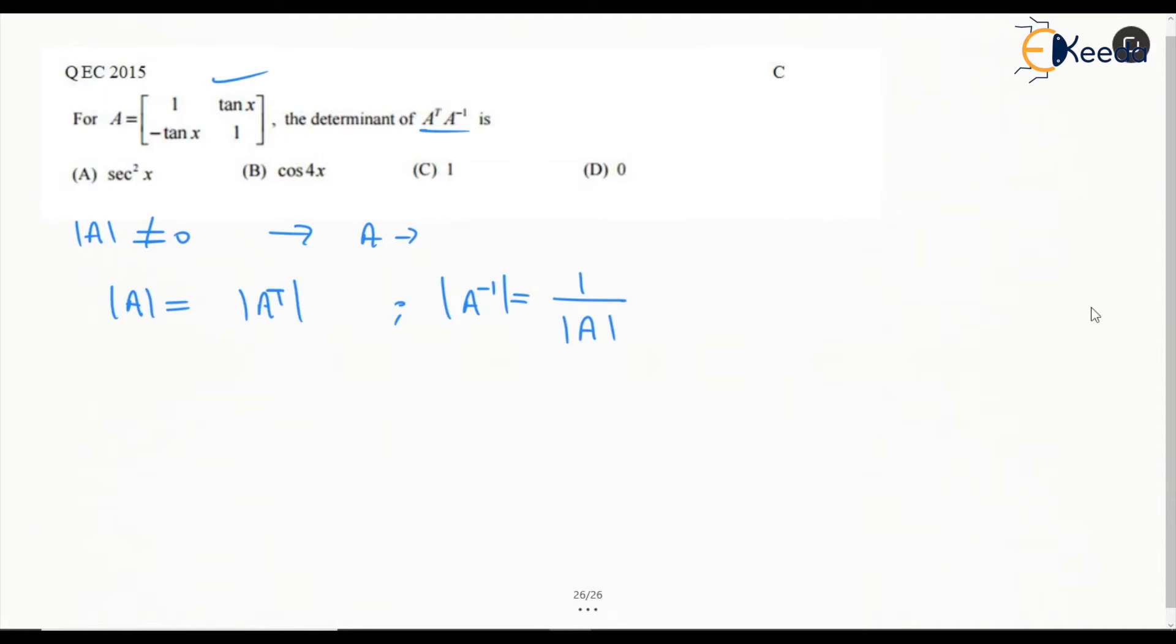We have read these two conclusions I will say, and the property which we have read is determinant of A B is given as determinant of A into determinant of B.